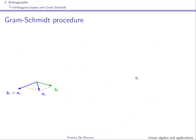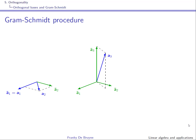Looking at the graphical example with the two original vectors A1 and A2 in blue, we keep the first vector so A1 bar is simply A1. To obtain A2 bar, we project A2 onto A1 bar and subtract: A2 bar equals A2 minus the projection of A2 onto A1 bar. We then proceed with the next vector A3, which in general will not be orthogonal to A1 bar or A2 bar.